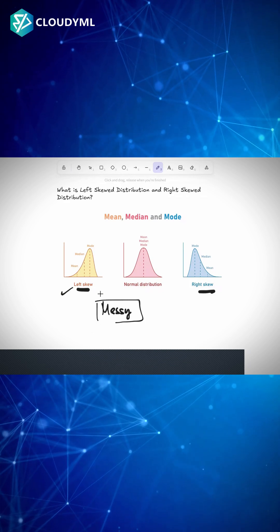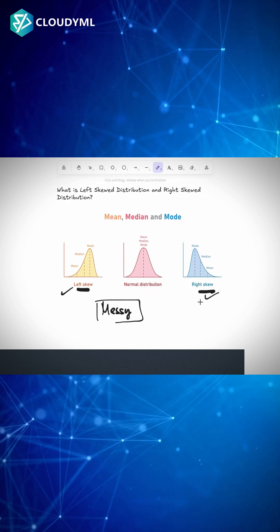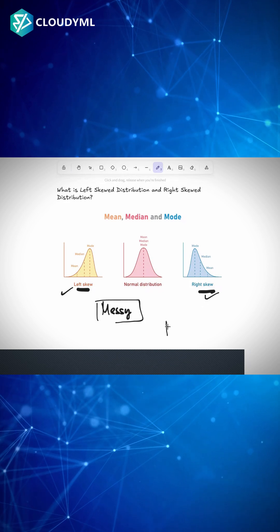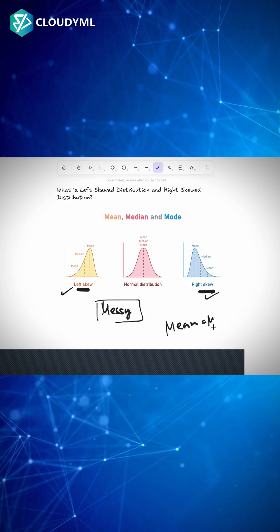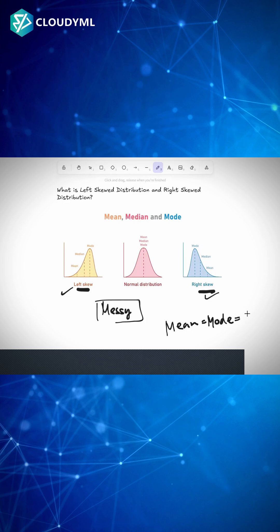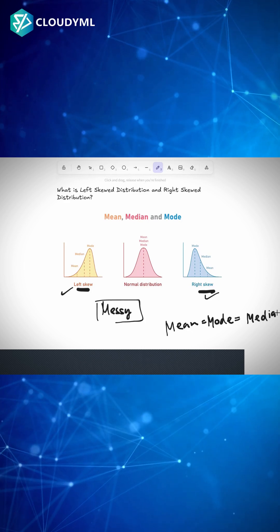We know that in normal distribution, mean equals mode equals median. But here, the mean, mode, and median are far away from each other, because of a long tail towards right or left.